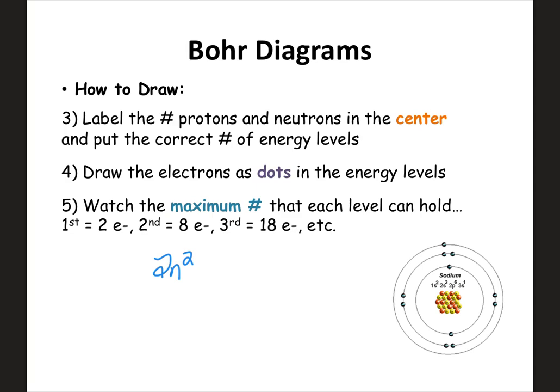You can use 2n² to figure out the maximum number of electrons for any energy level. N would be the energy level you're in. So if you're in the second energy level, you do 2² which is 4, times 2, you can have 8. So those are the steps for Bohr diagrams, but you need to actually follow them and practice some examples.